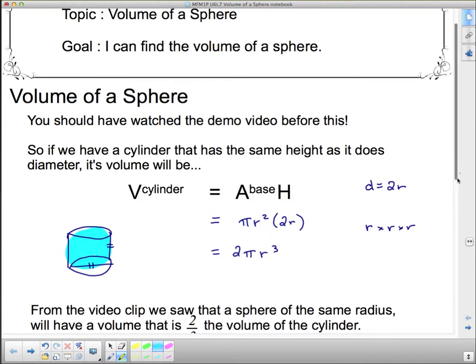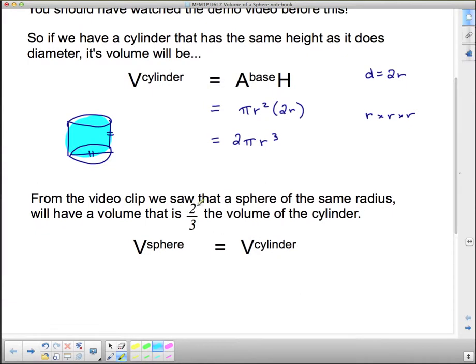From the video clip we saw that the sphere is two-thirds—whoops—the volume of the sphere is two-thirds the volume of a cylinder. So we need two-thirds of this thing.